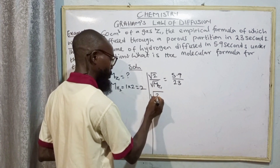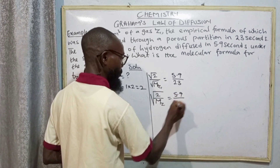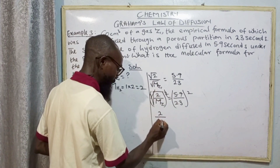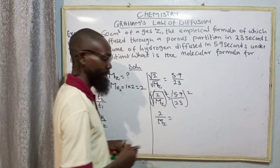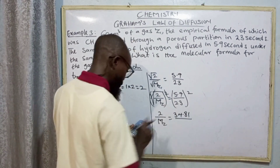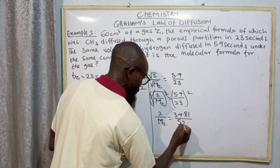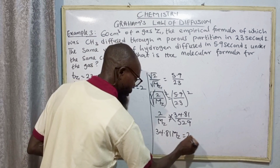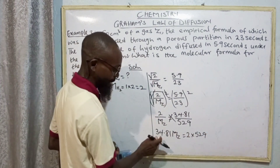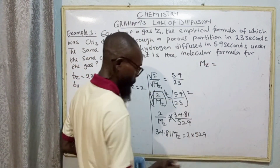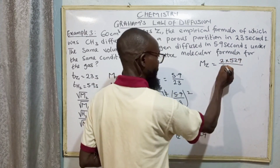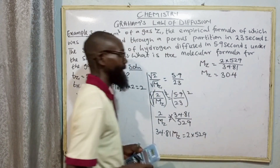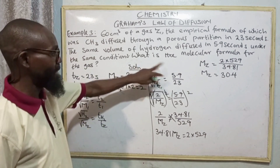Squaring both sides: 2 over M_Z equals 5.9 squared over 23 squared, which gives 34.81 over 529. Cross multiplying: 34.81·M_Z equals 2 multiplied by 529. Dividing both sides by 34.81, M_Z equals 2 × 529 divided by 34.81, giving us approximately 30.4. So that is the relative molecular mass of gas Z, but we are asked to find the molecular formula.